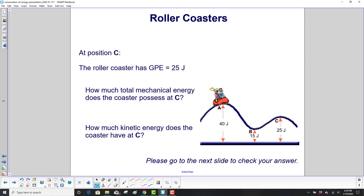And finally, the roller coaster, having started, got pulled up here, comes down, goes up. Now we're at point C. What's the total mechanical energy there? And how much kinetic energy does it have at C?